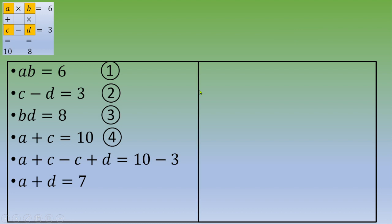Now, if you look at equation number 1, A times B equals 6, you can transform that into B equals 6 over A. From equation 3, B equals 8 over D.